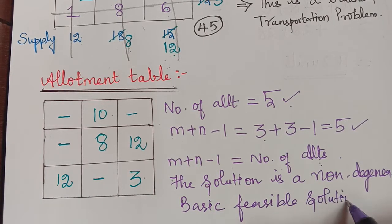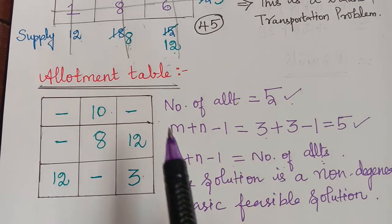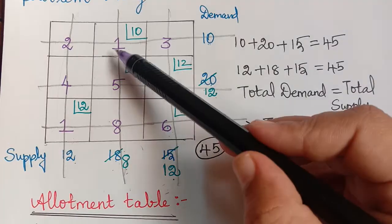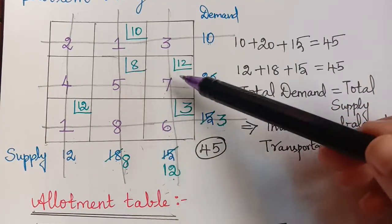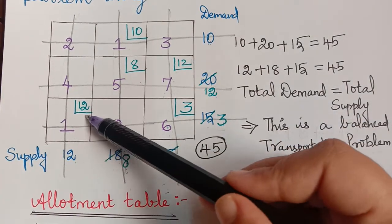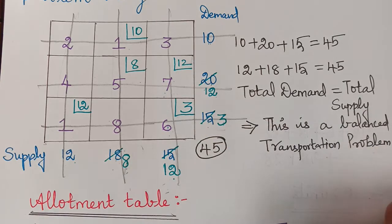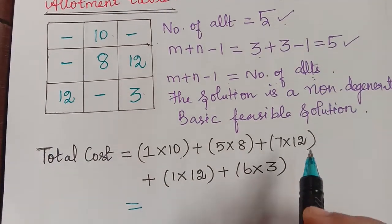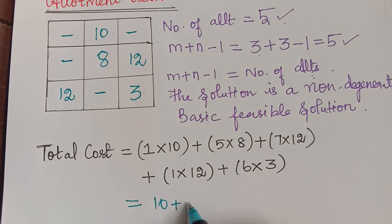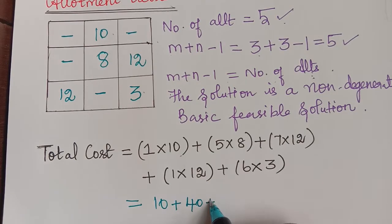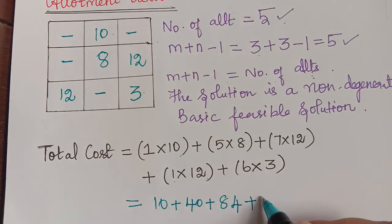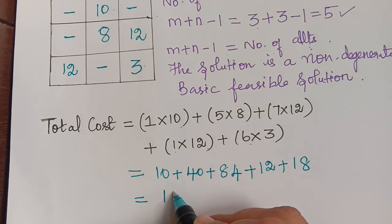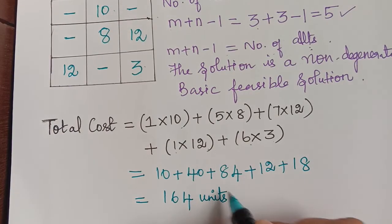Now we evaluate the total cost by multiplying each allotment by the cost of that cell: 1×10 + 5×8 + 7×12 + 1×12 + 6×3, which equals 10 + 40 + 84 + 12 + 18. Therefore, the total cost is equal to 164 units. This is the answer.